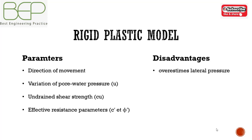Since at no time could all of the soil be at the deformation required to mobilize the shear resistance, a rigid plastic model will overestimate the stability of the retaining structure.